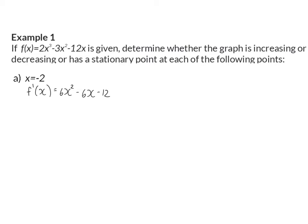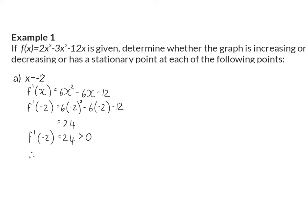We want the derivative at the specific point where x is minus two, so we substitute x with minus two, and this gives us a value of 24. So now we know that the gradient at x is minus two is equal to 24, which is a positive value, or bigger than zero. So our conclusion can be that the function is increasing at x is equal to minus two.